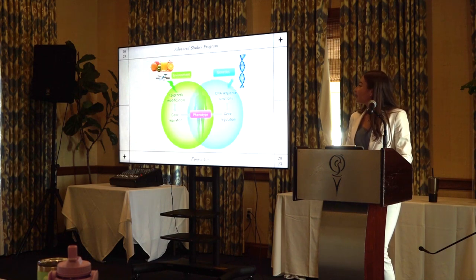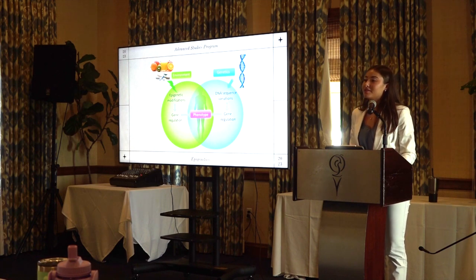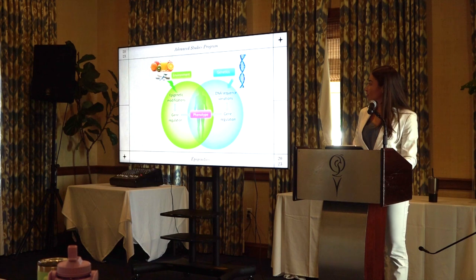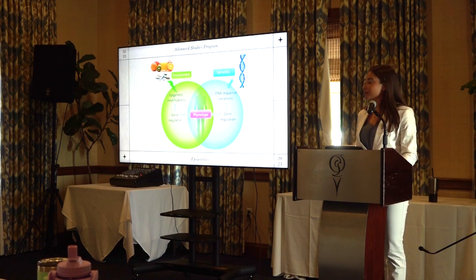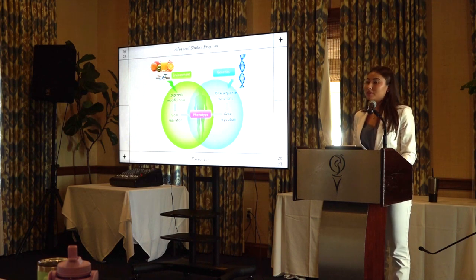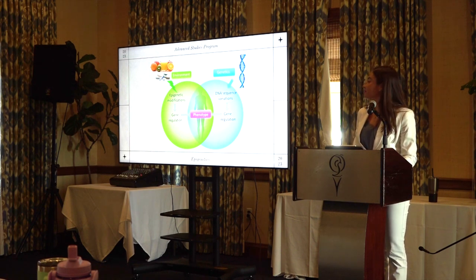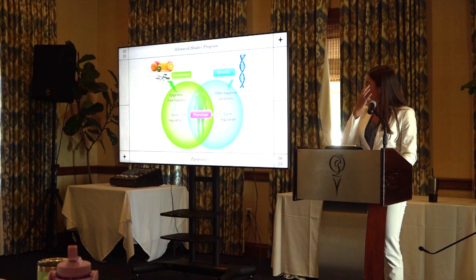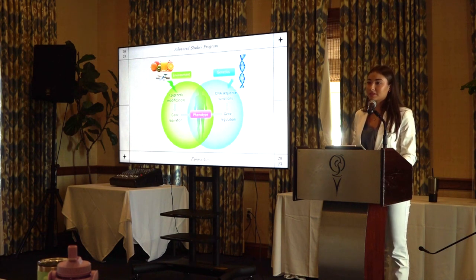Another factor that interferes with genetic cloning is epigenetics — the study of how the environment changes gene expression. One useful example is identical twins. Although identical twins have the exact same genetic makeup, they will probably act differently and look a little bit different because of epigenetic factors — the environment they're in, their interactions, and how they live. Epigenetics poses a negative impact on gene cloning, because the cloned organism will not be the same as the original organism due to the new environment and different interactions it will experience.